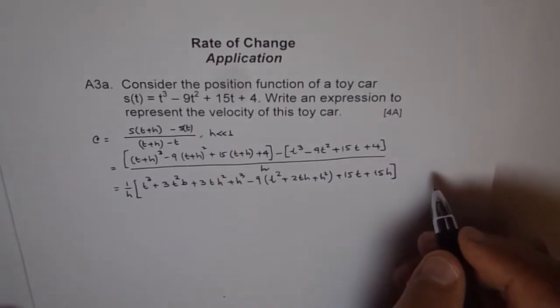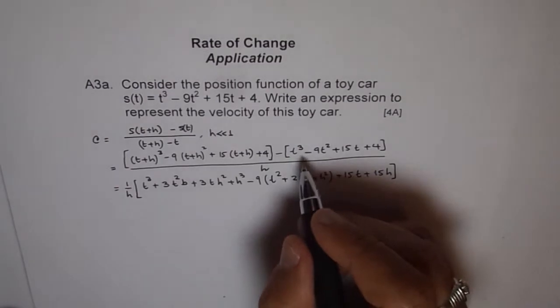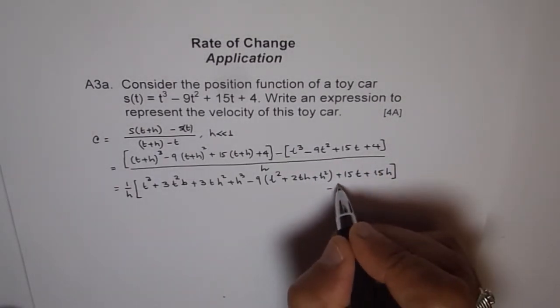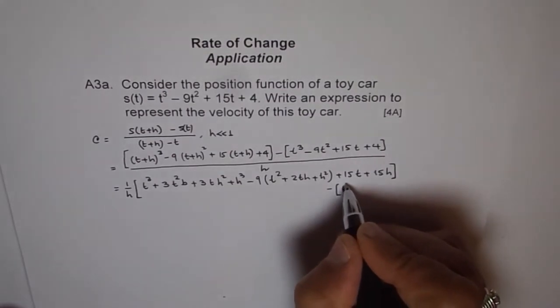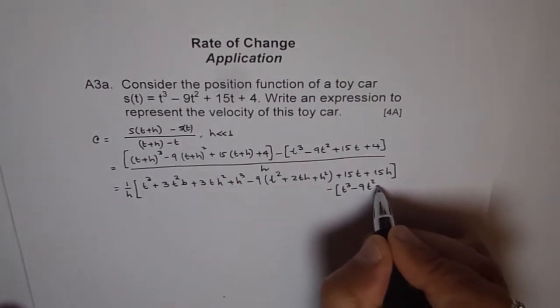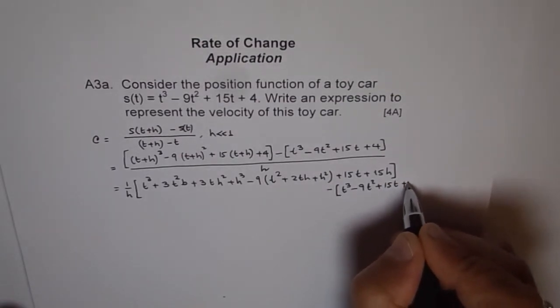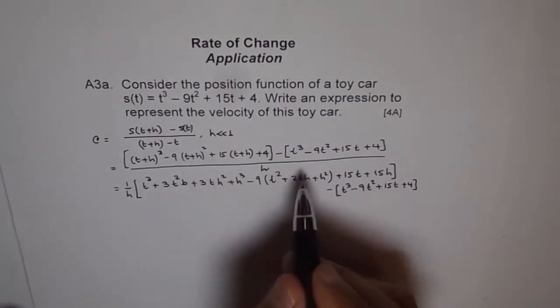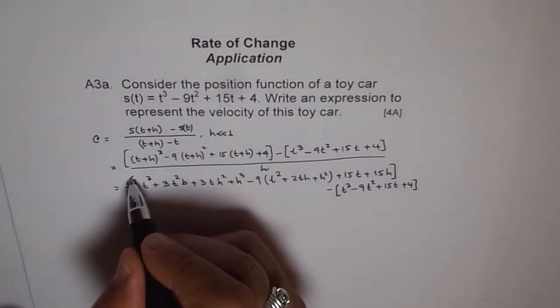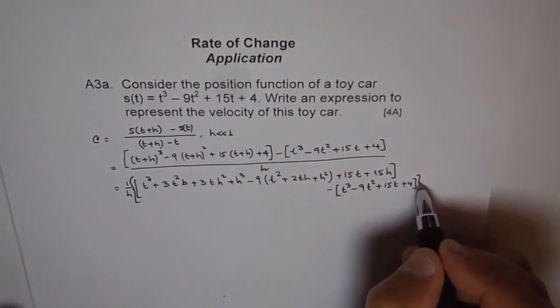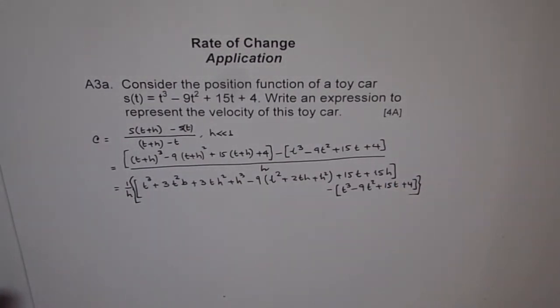And then minus of - let me write this here - minus of t³ - 9t² + 15t + 4. And because this h divides both, let me put bigger brackets. So we got up to here.